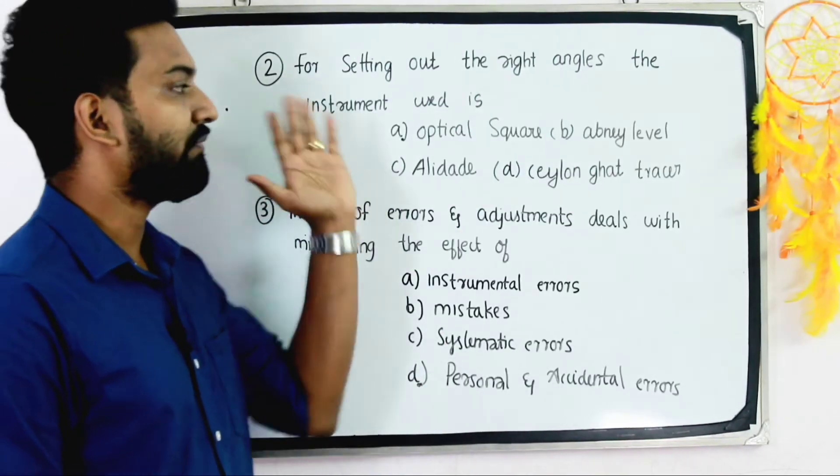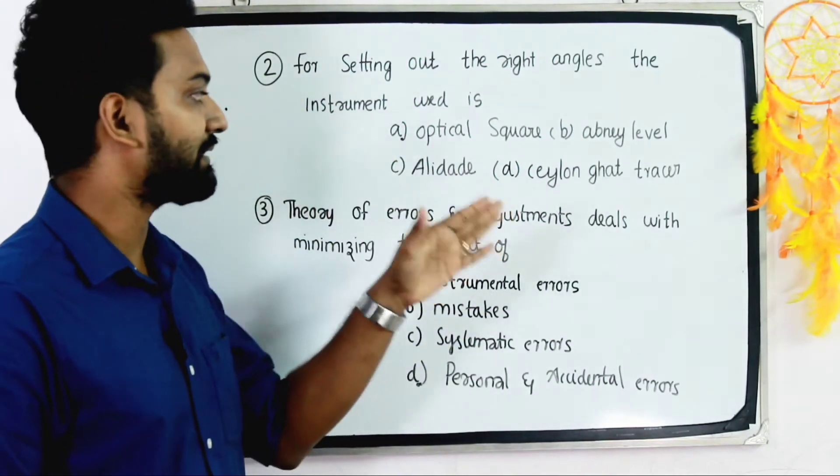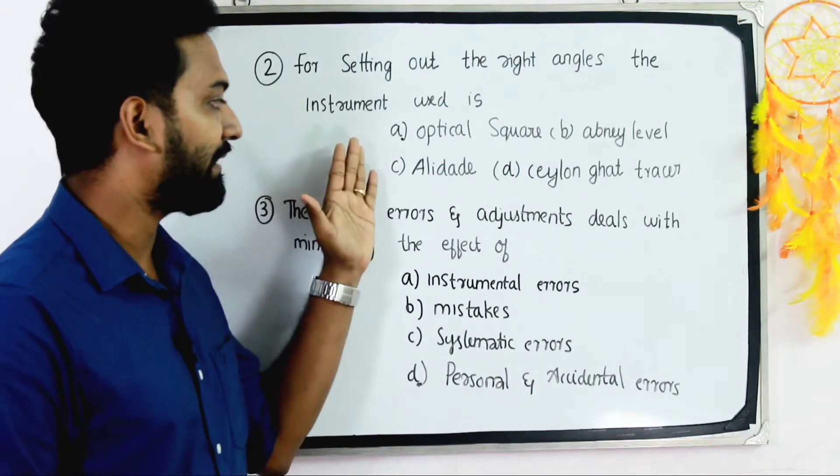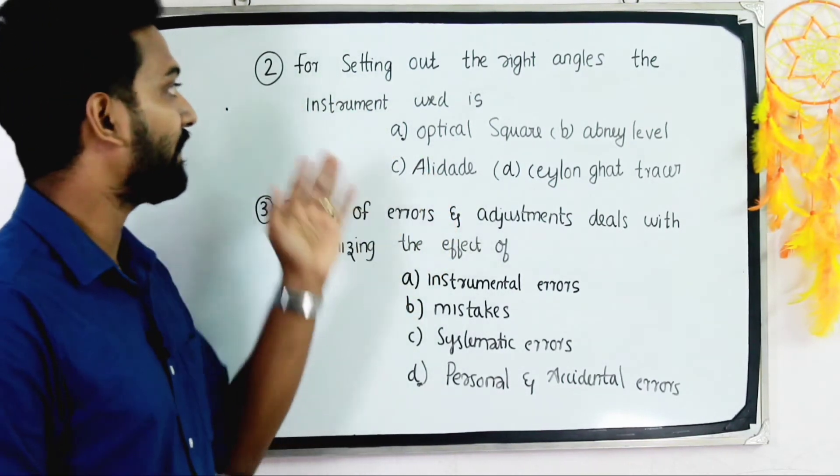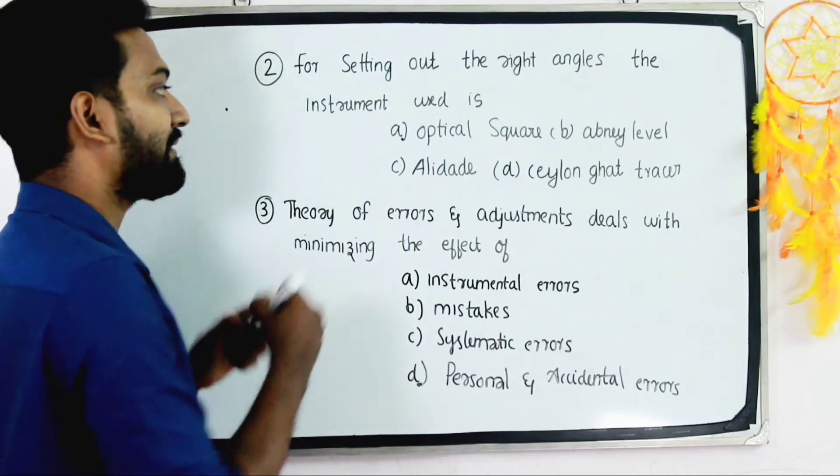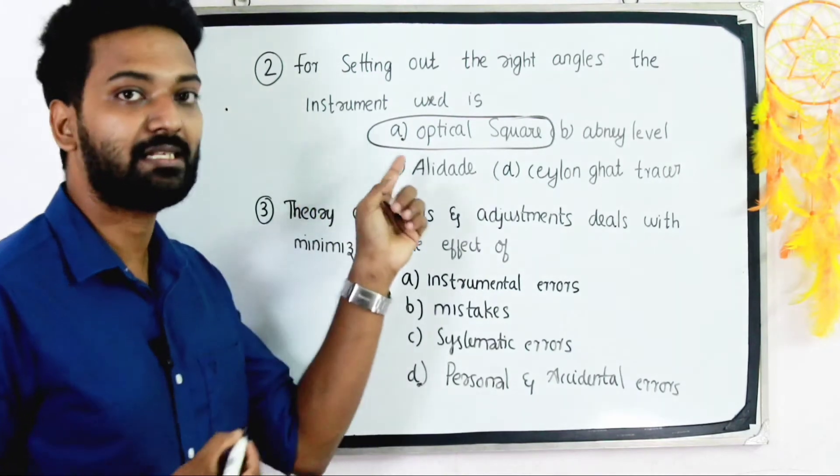For setting out right angles, the instrument used is: Option A - optical square, B - abney level, C - alidade, and D - ceylon gut tracer. The answer is option A, optical square.